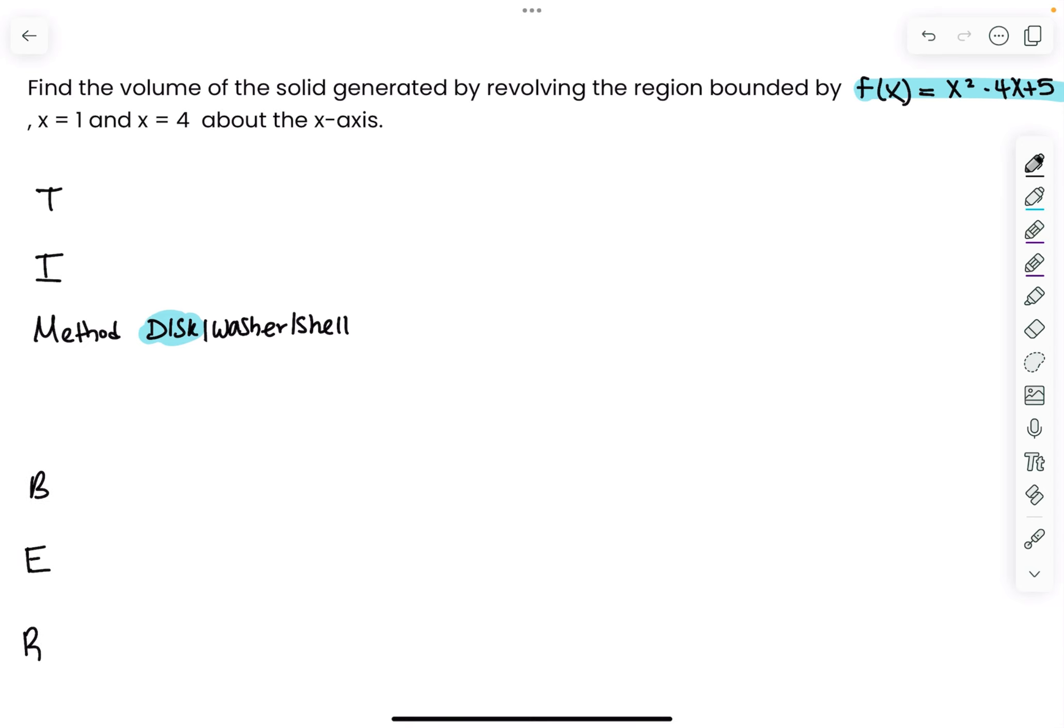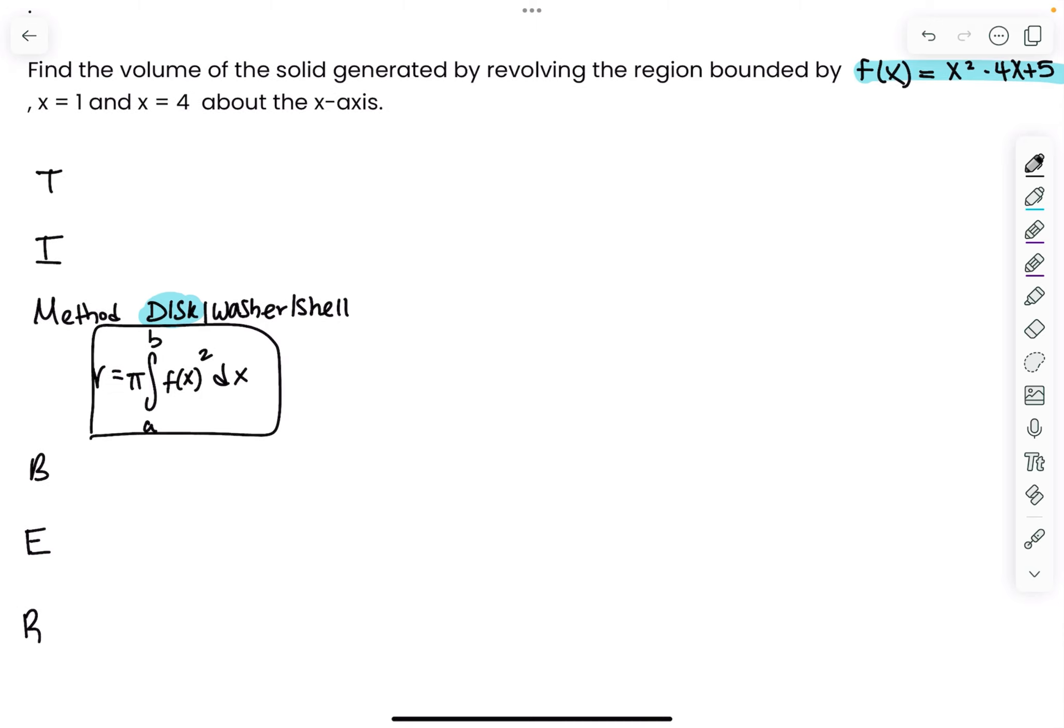Then I write down the formula. The formula for disk is the integral from a to b of π times R squared dx. But R squared is just R of x squared, which is really just your function. So I like to say f(x) squared, because your radius is always going to be your function. I write everything in terms of x first, but I have to check if it's going to be in terms of x or y.